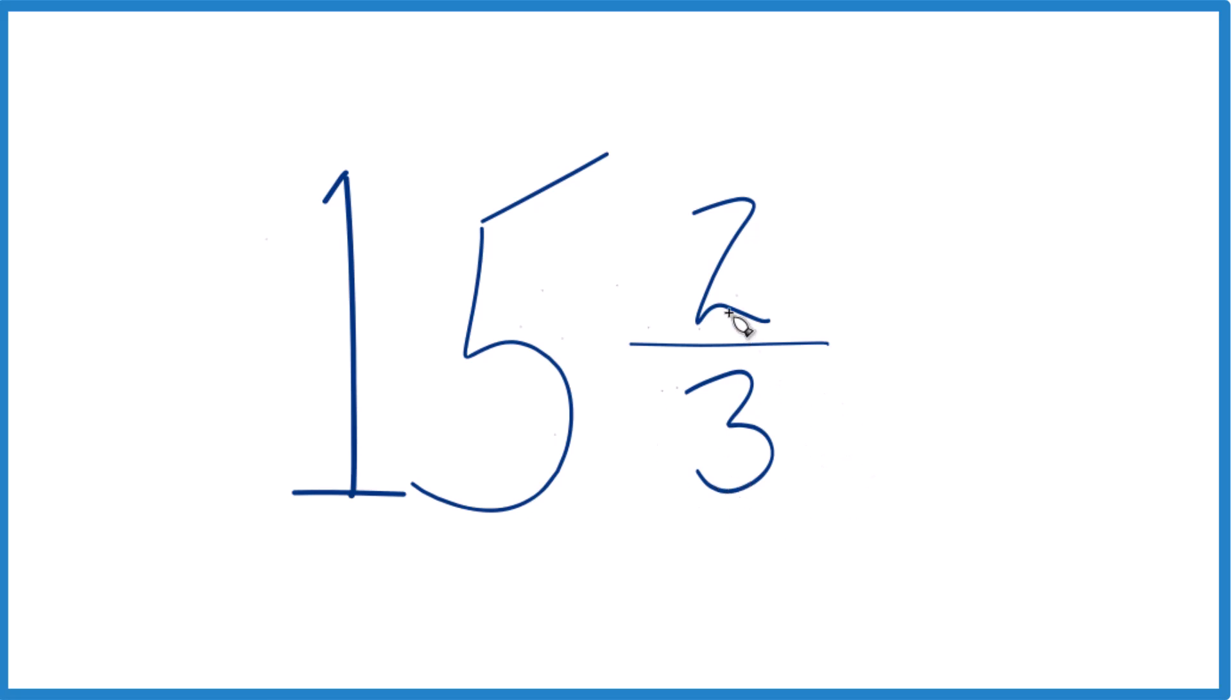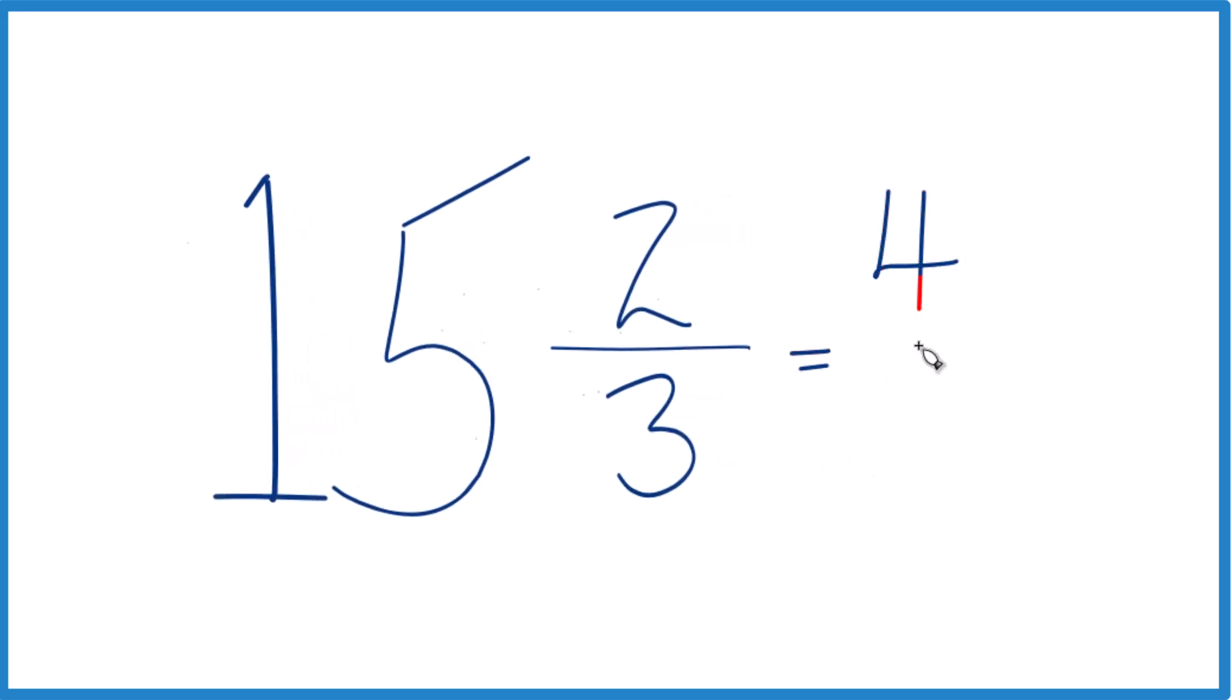Then you take the 45 and add it to 2, so 45 plus 2, that's 47. That's our numerator.